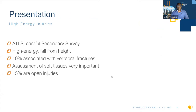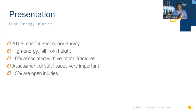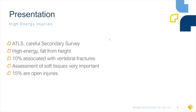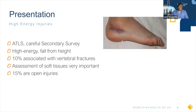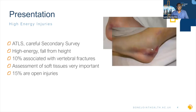These are really high energy injuries, so ATLS and a careful secondary survey apply. We're often talking about falls from height — imagine landing on your heels, that force transmitting through your ankles, tibia, knees, femurs, hips, and into your back. About 10% of calcaneal fractures are associated with vertebral fractures, so there's a high rate of associated ipsilateral and contralateral injury. Assessment of soft tissues is super important — the skin around the heel is generally pretty poor. About 15% are open injuries, and you may see fracture blisters appearing.